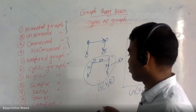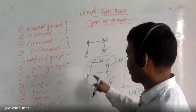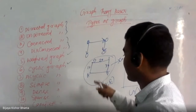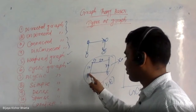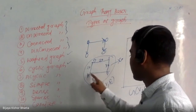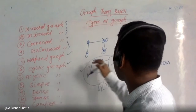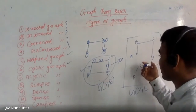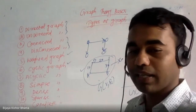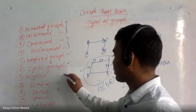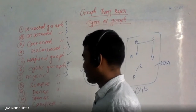A cyclic graph means the graph contains a cycle. A cycle means you start from a vertex and you are able to come back to that same vertex. If any graph contains a cycle, it is known as a cyclic graph. An acyclic graph means there is no such vertex where you can start and return to that same vertex — so that is known as an acyclic graph. They come together as opposites: cyclic and acyclic.